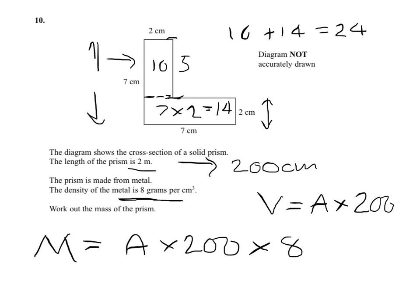So our mass is going to be 24 times 200 times 8. Now we need to work that out without a calculator. We should realize that 200 times 8 is 1,600, so we need to multiply 1,600 times 24.